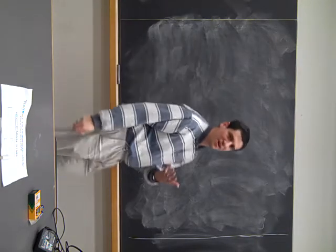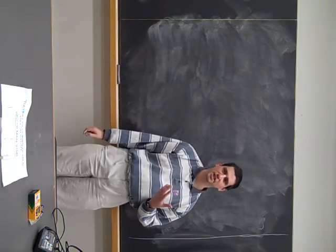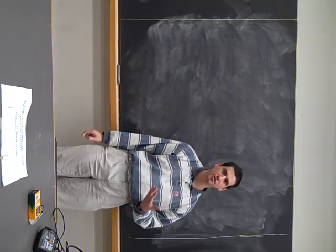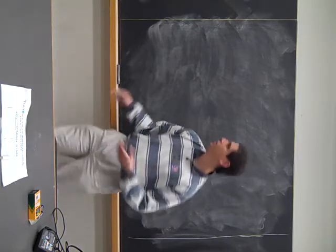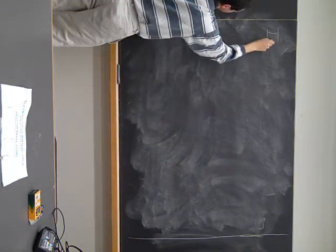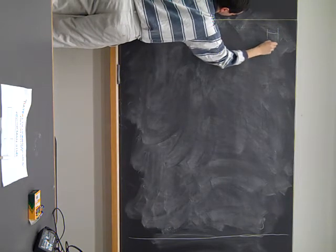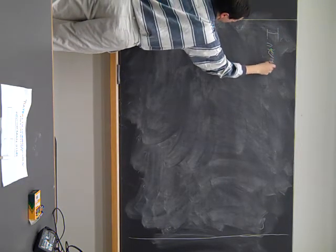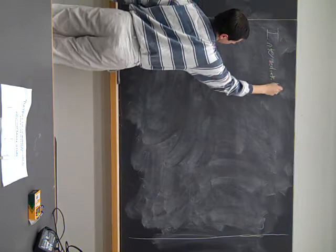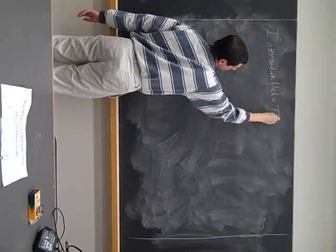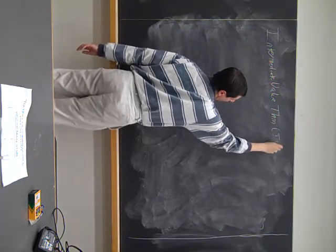Okay, so now the second part of the background lecture is some of the key theorems from Calc 1. We have the intermediate value theorem, which since we're lazy, we abbreviate as I.V.T.